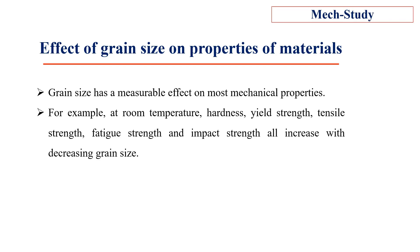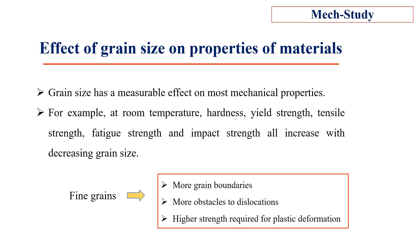For example, at room temperature, hardness, yield strength, tensile strength, fatigue strength, and impact strength all increase with decreasing grain size. This is because fine grains have more grain boundaries, which act as more obstacles to dislocation movement.